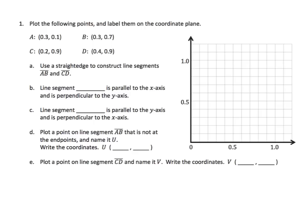Same with our y-axis as well. Let's first do A. We have 3 tenths and 1 tenth. We check out our x-axis first, then go to our y-axis, and we'll label that A. And B is 3 tenths and 7 tenths. So we have 3 tenths — we're on the same vertical line — and we have to go up to 7 tenths. Label that B.